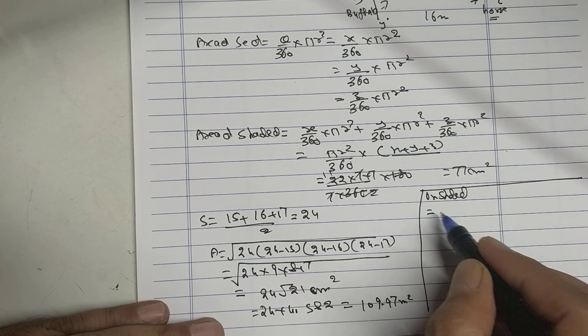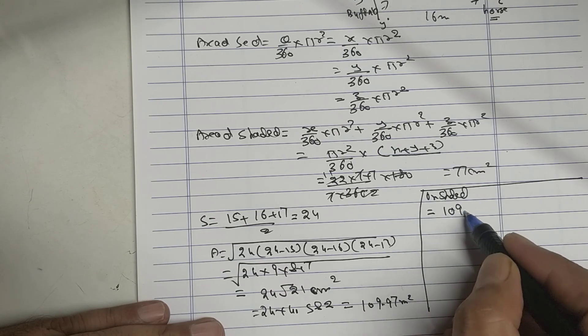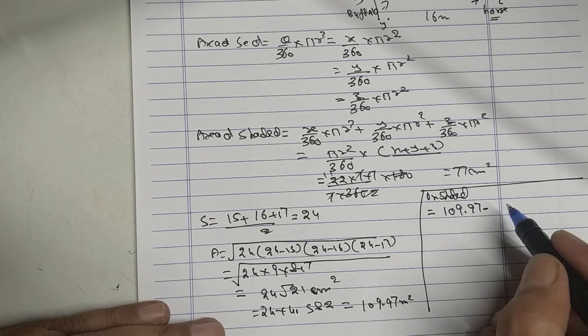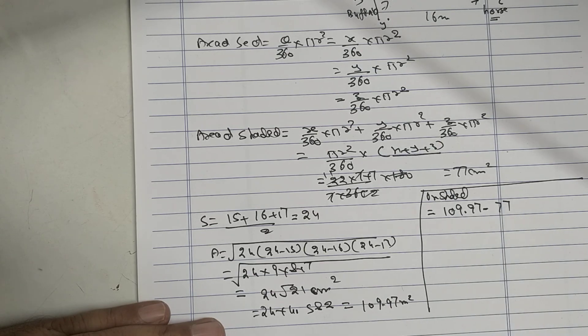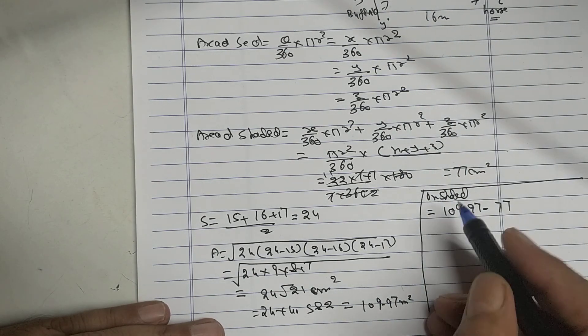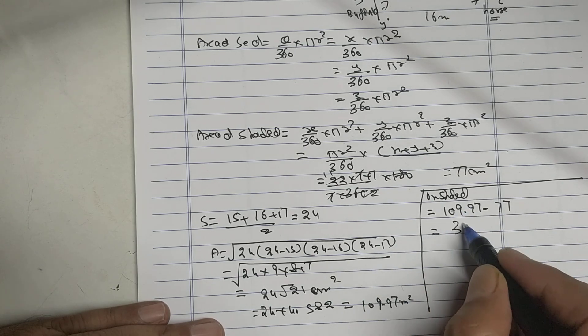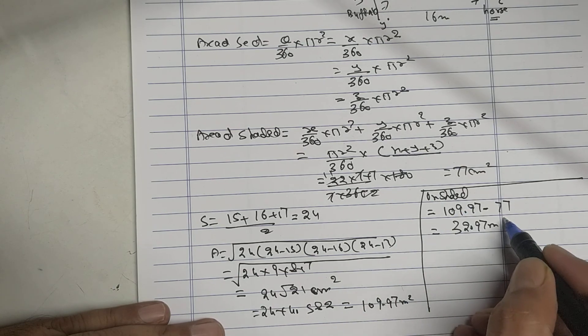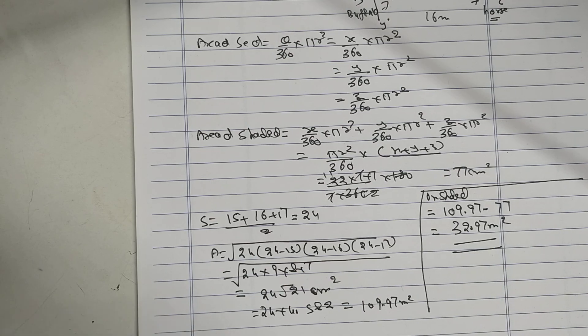Final answer: unshaded area equals triangle area minus all three sectors, which equals 32.97 meter square. Video ends.